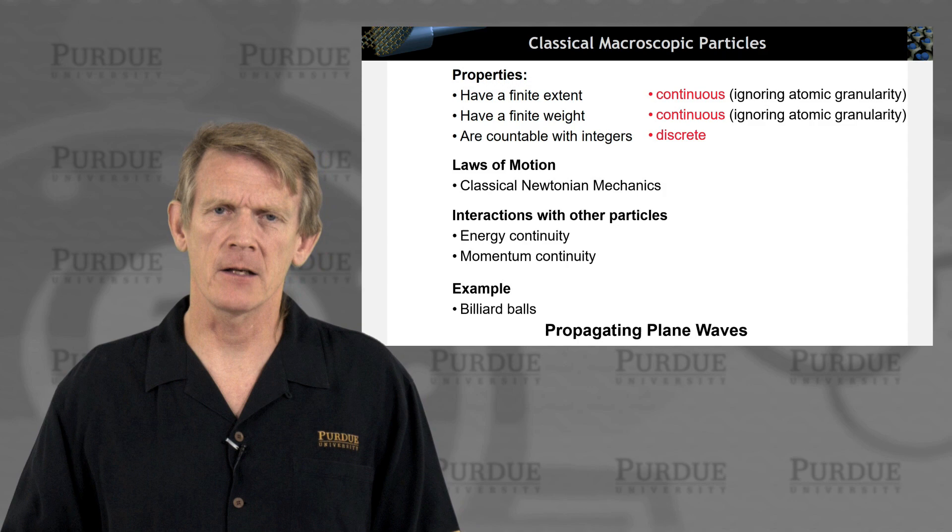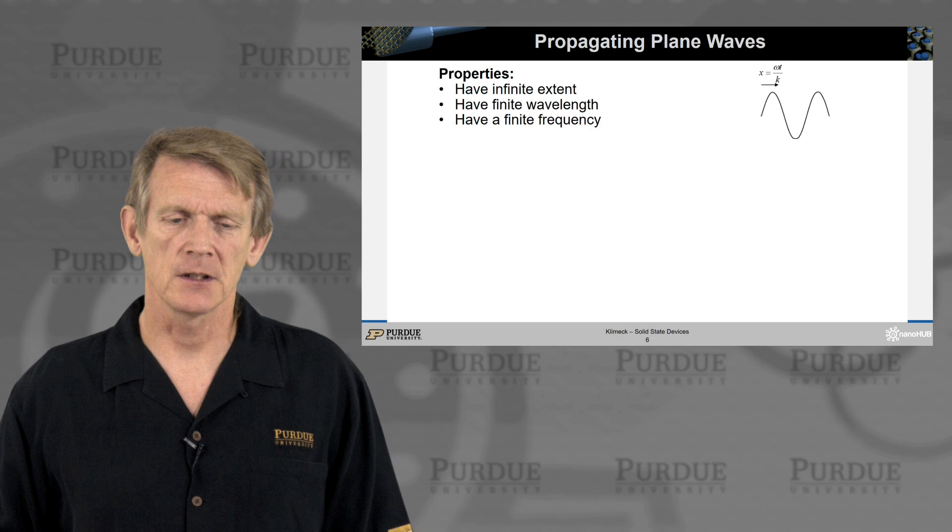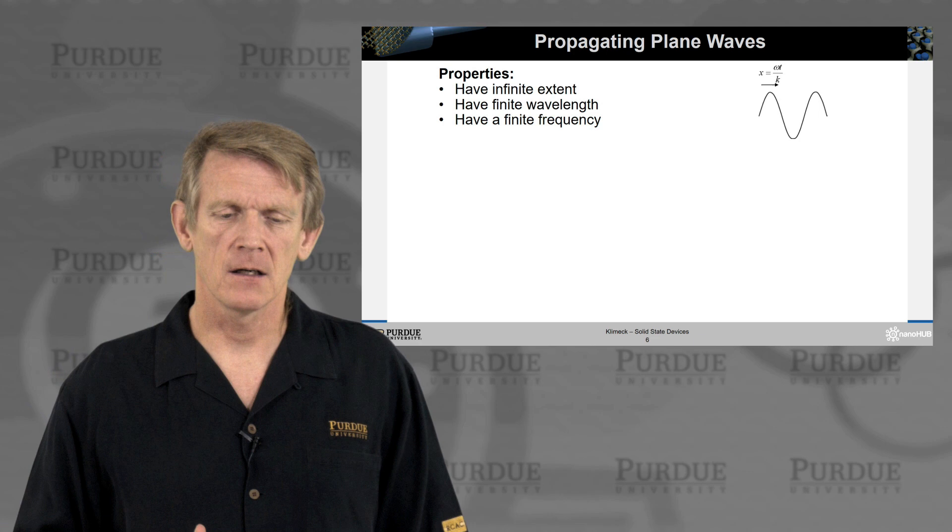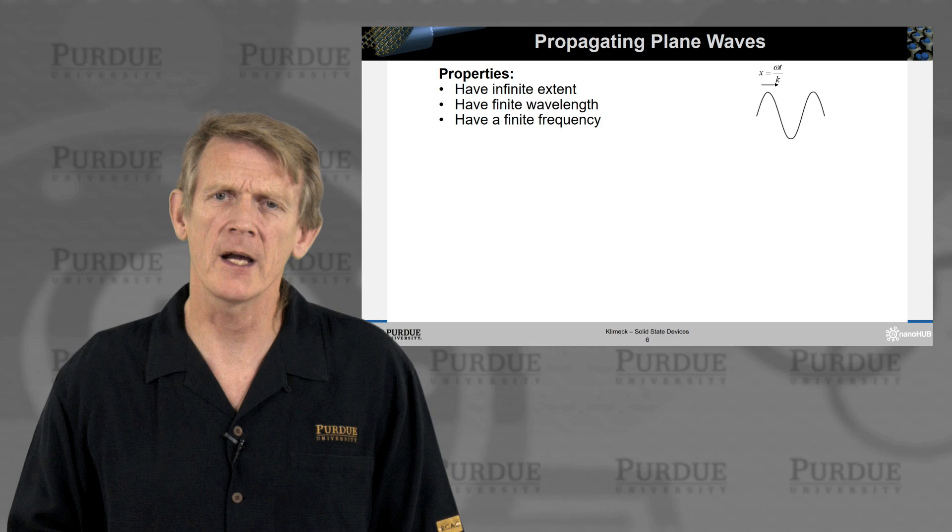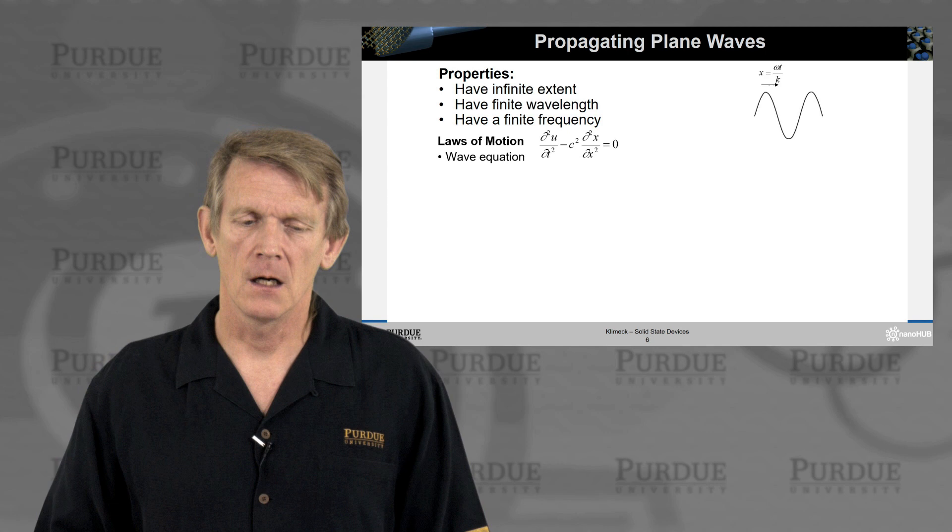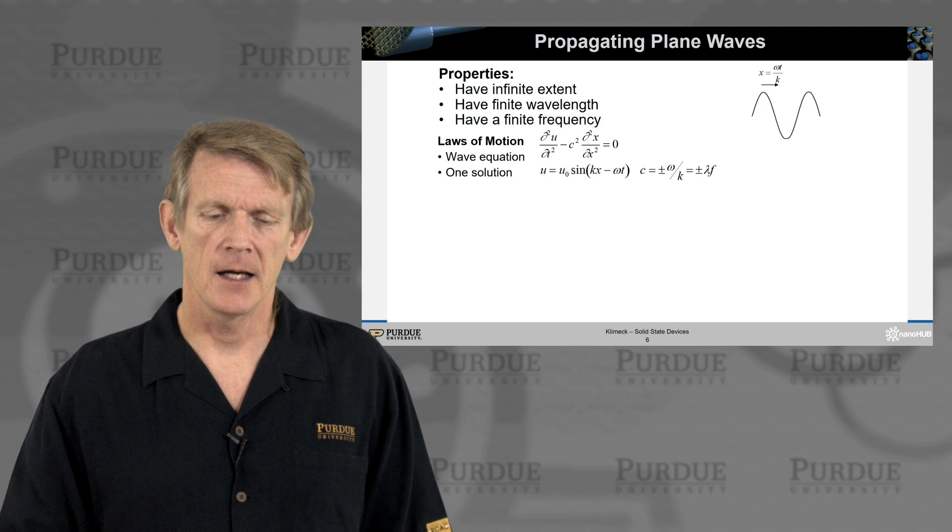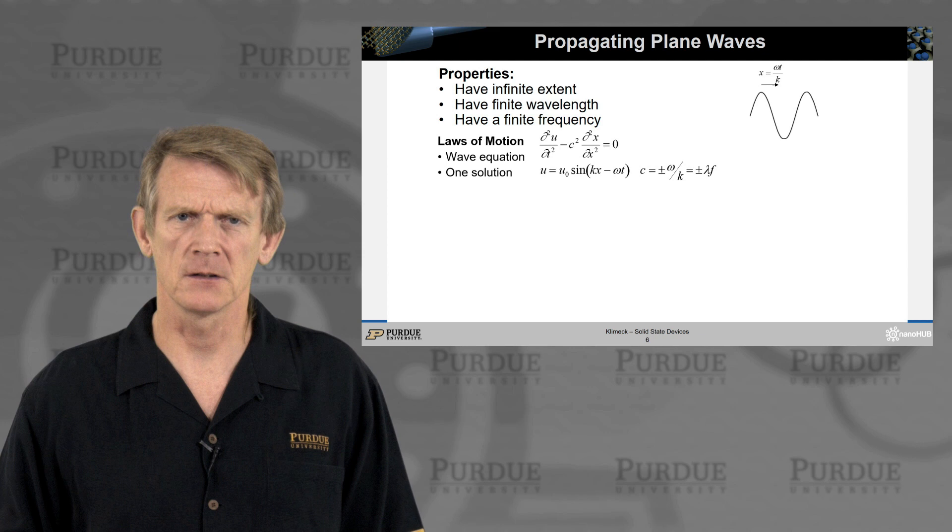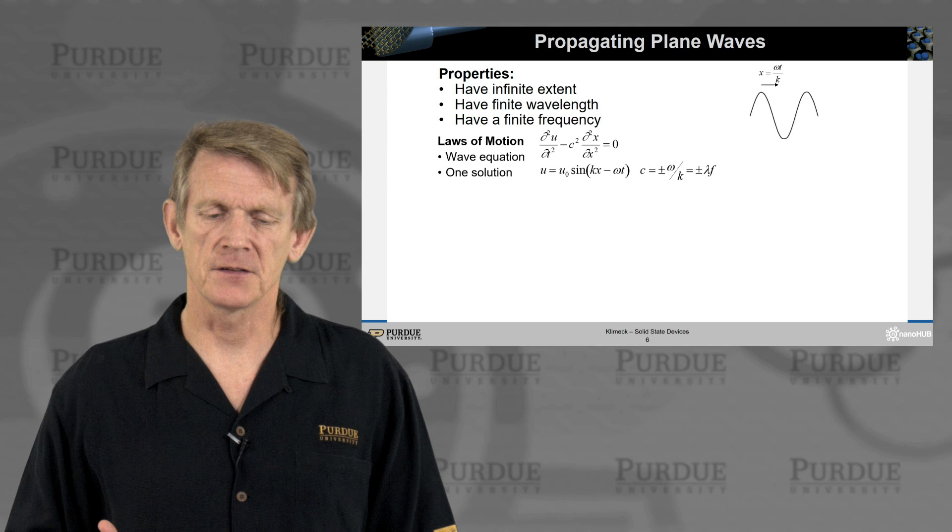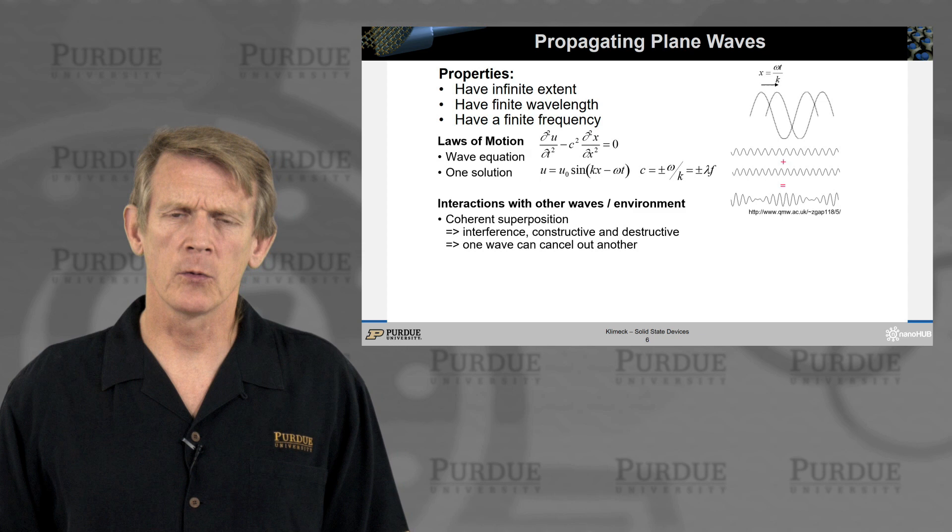All right. Now let's look at propagating plane waves as another classical thing that occurs in our environment. So these waves have an infinite extent as a mathematical concept. They don't start, they don't stop. They have a finite wavelength and a finite frequency. So we could describe a wave by, say, a sinusoid like this. They have a propagation constant in time and in space, and they have an amplitude. These waves obey the wave equation as depicted here, and a typical solution for this wave equation is a sinusoid. It could be a complex exponential as well, as we'll use throughout the course a lot. It has an amplitude, it has a propagation vector, and has a time and space dependence.